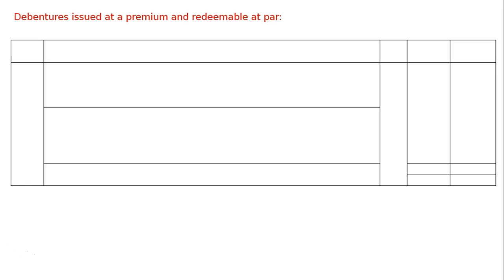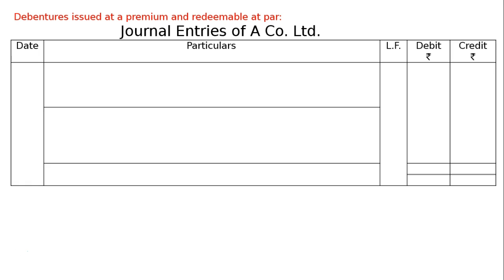Hence the headline is: debentures issued at a premium and redeemable at par. Journal entries of A Company Limited — draw the journal format.